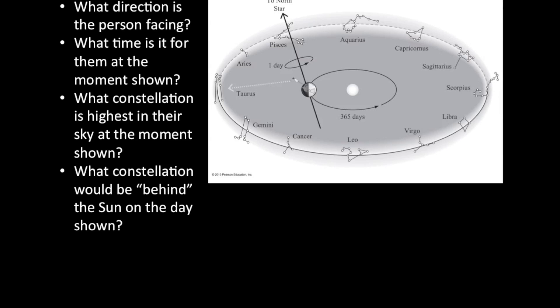What about the constellation that would appear to be behind the Sun on this particular day? Well, if you were this person, then on this day, if you face to the Sun, I'm just going to take my cursor and move it from the Earth to the Sun. And if I keep going, then the constellation that would appear behind the Sun would be Scorpius.